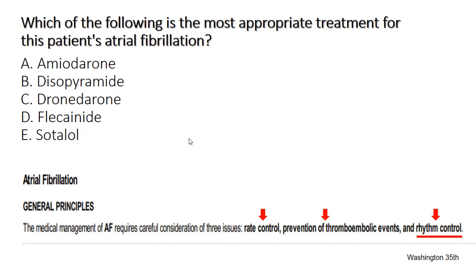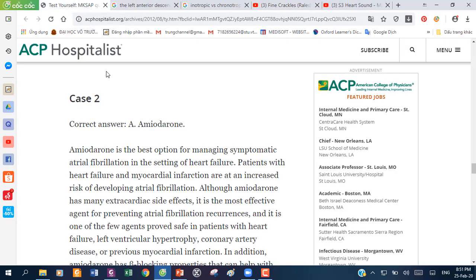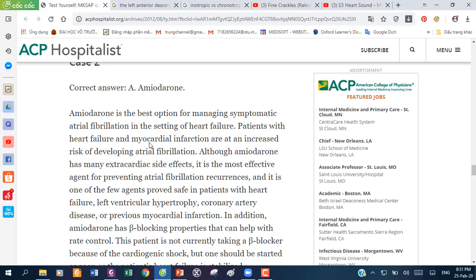Theo sách Washington, để quản lý bệnh nhân rung nhĩ cần xem xét 3 vấn đề: rate control, prevention of thromboembolic events, và rhythm control. Cả 5 đáp án đều thuộc nhóm rhythm control. Đáp án đúng là A - Amiodarone.